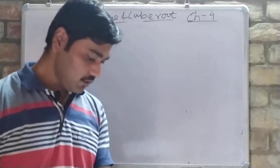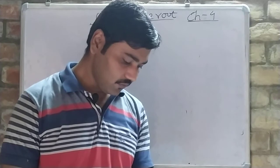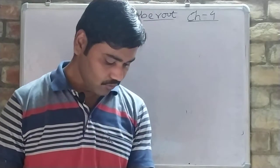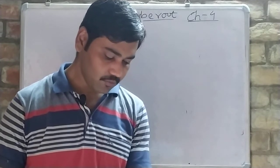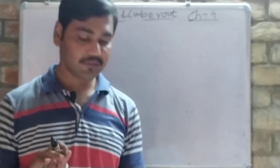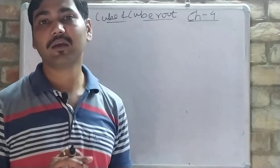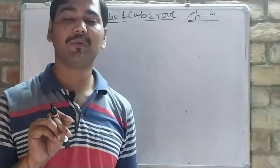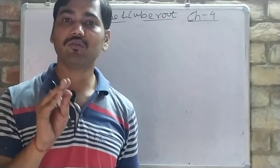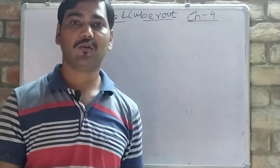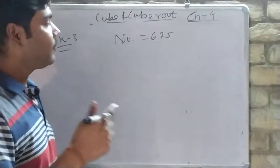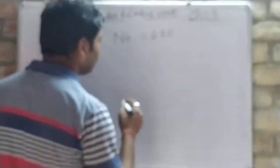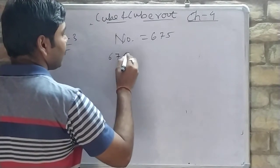Now see Example 3 from page 62. What is the smallest number by which 675 must be multiplied so that the product is a perfect cube? The question gives 675, which is not a perfect cube. We need to find the smallest number to multiply it by to make it a perfect cube. So we will take the prime factorization of 675.